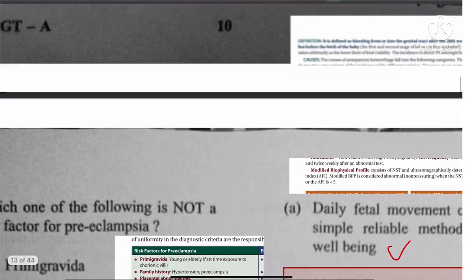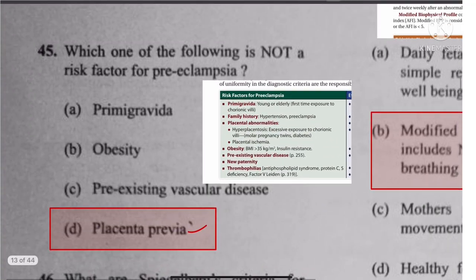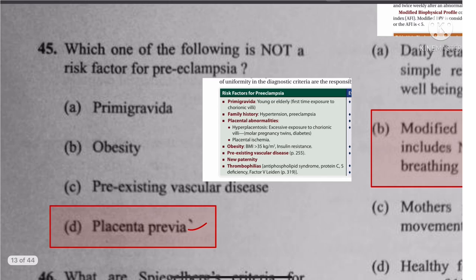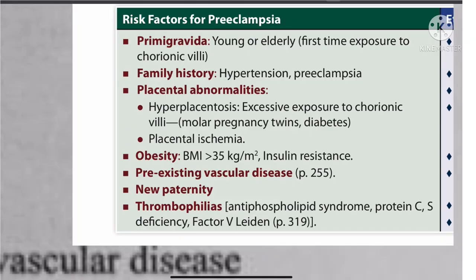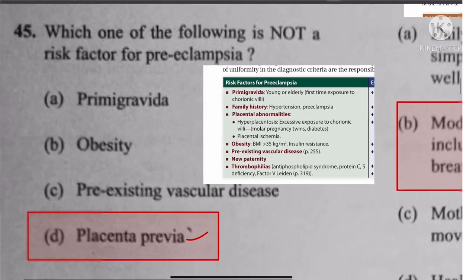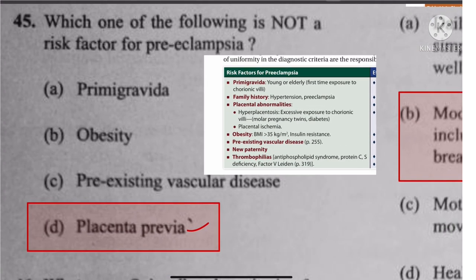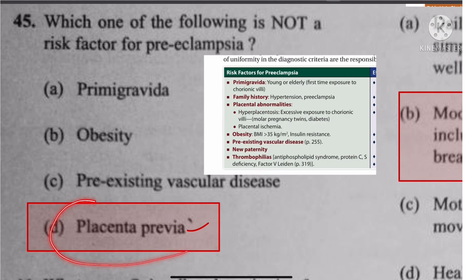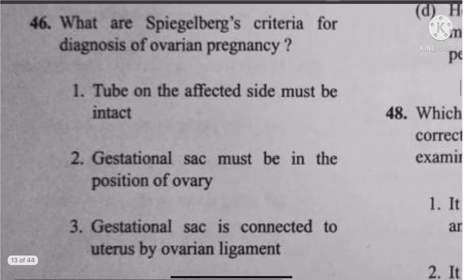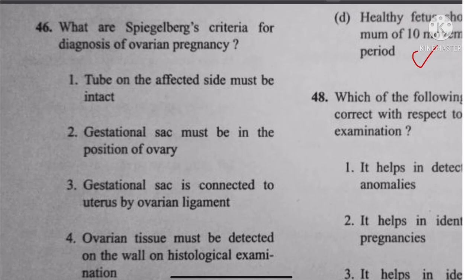Question 44-45: Risk factors for preeclampsia — placenta previa is not mentioned as a risk factor. Statements A, B, C are true; placenta previa is not a risk factor. Question 46: Spiegelberg criteria for diagnosis of ovarian pregnancy — the four criteria are: tube on the affected side intact, gestation sac in the position of the ovary, gestation sac connected to the uterus by the ovarian ligament, and ovarian tissue found on histological examination. All four statements are correct.